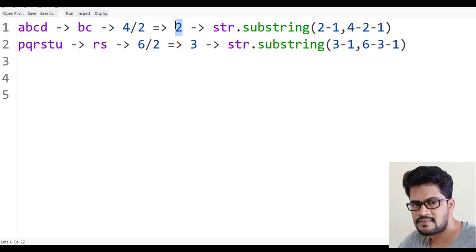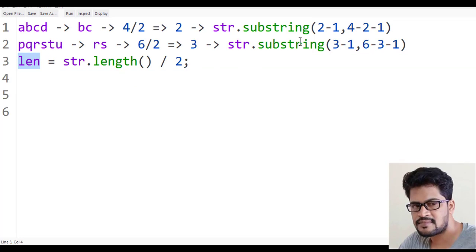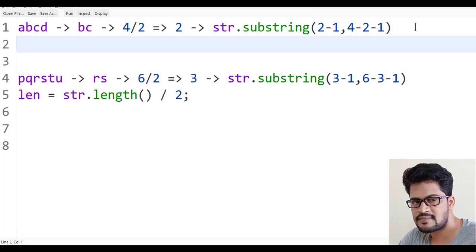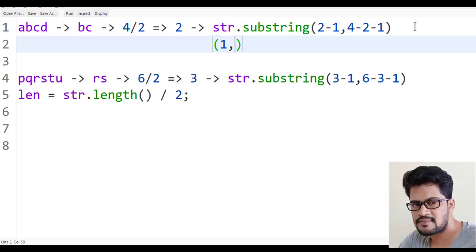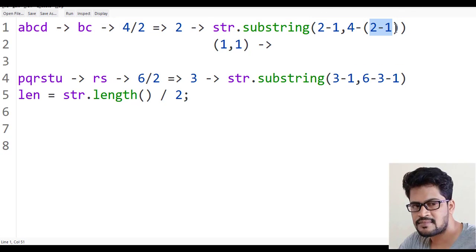Actually, what I am doing is, this 2 and 3 is there, right? Let's take something: length is equal to str.length divided by 2. If I do this, I get the length. So I am assuming length minus 1 and str.length minus length minus 1. What is this? 4 minus 2 minus 1 is 1. So 4 minus 1 is 3.